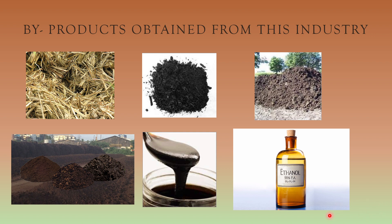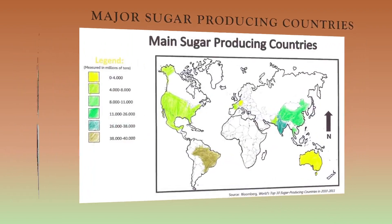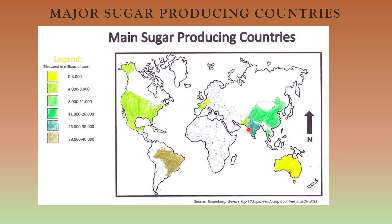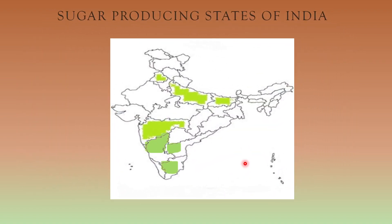The major sugarcane producing countries in the world are Brazil, India, China, Thailand, Pakistan, Mexico, Colombia, Indonesia, the Philippines, and the USA. In India, the sugarcane industry is mostly concentrated in the states of Uttar Pradesh, Maharashtra, Karnataka, Tamil Nadu, and Andhra Pradesh. Bihar and Punjab are also major producers, but their production is relatively less compared to these states.